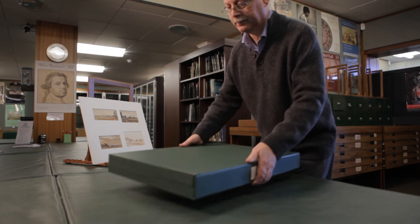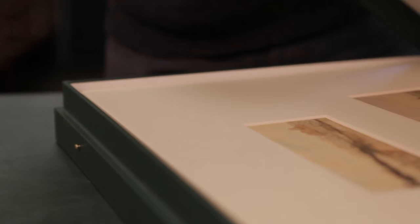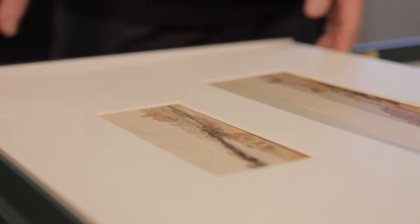Well, in this box we have a group of watercolors by Joshua Crystal. He was an English watercolorist in the same period as Turner, and they have deteriorated quite a bit prior to them entering the National Gallery's collection.